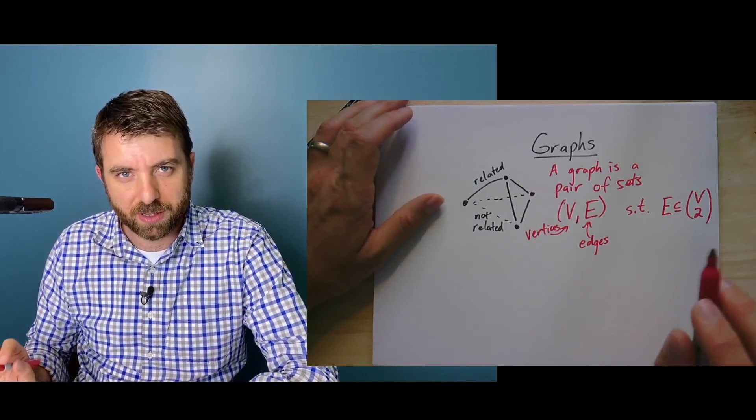You may have encountered other kinds of graphs in other classes. Right now, this kind of graph would sometimes be called a simple undirected graph, but I'm not going to throw in all these adjectives all the time. For the sake of this class, when I say a graph, I mean this—just a pair of sets where the second set is a collection of pairs of the first set. The edges are two-element subsets of V.